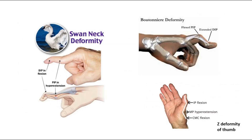Let's take a look at the pictures. The first picture shows the swan neck deformity, where the DIP is in flexion and the proximal interphalangeal joint (PIP) is in hyperextension, so it looks like a swan neck. The second picture shows the boutonnière deformity, which is opposite to the swan neck deformity — the distal joint is extended and the proximal joint is flexed. For Z-deformity, it involves the thumb, where there is interphalangeal flexion, MP hyperextension, and carpometacarpal joint flexion. These are the few deformities we might see in rheumatoid arthritis patients.